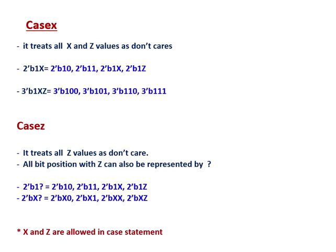So if it is written like 2b1x, this x can be 0, this x can be 1, this x can be x, or this x can be z. So 2b1x is equivalent to 2b10, 2b11, 2b1x, and 2b1z — because it reads all x and z values as don't care.